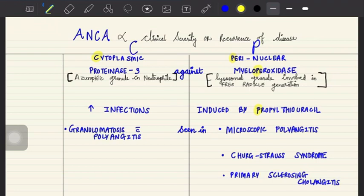There is increase in C-ANCA in infections, whereas P-ANCA is induced by propylthiouracil. These ANCAs are mostly increased in vasculitis conditions. For example, C-ANCA is increased or seen in granulomatosis with polyangiitis, which